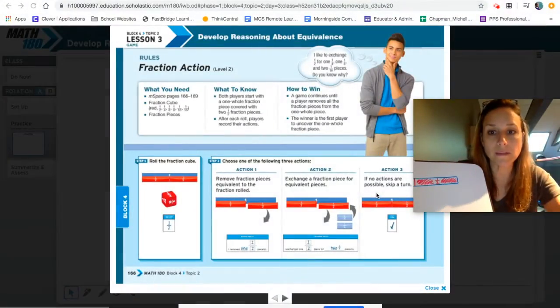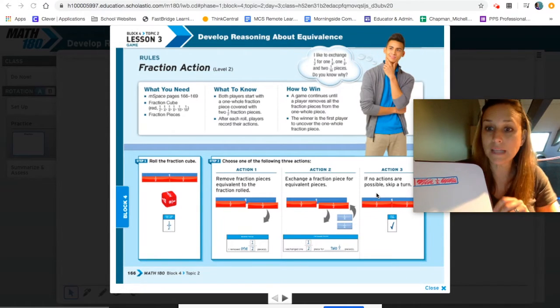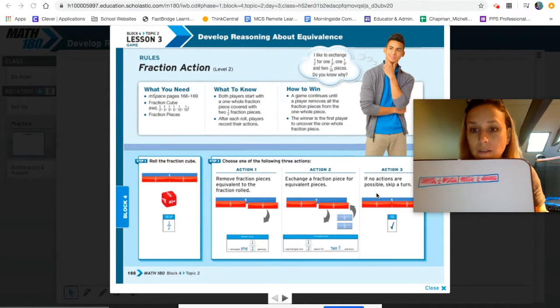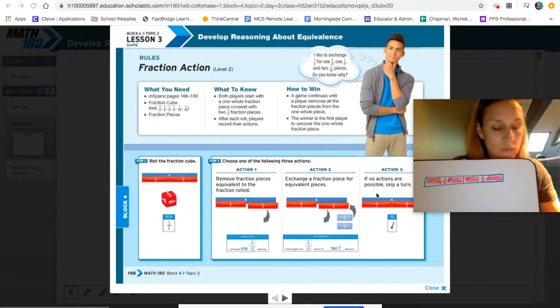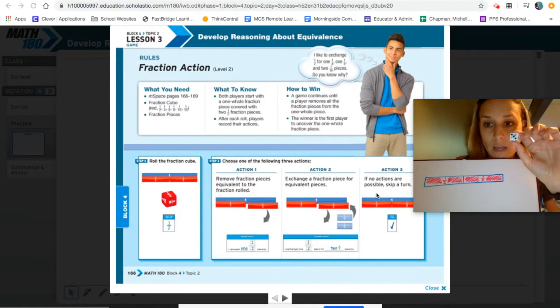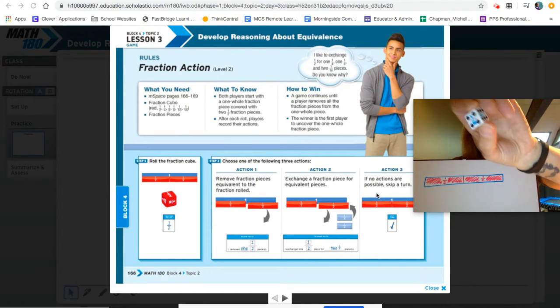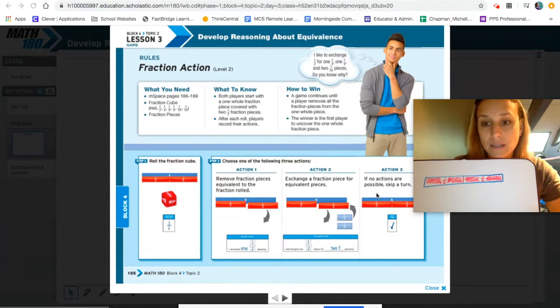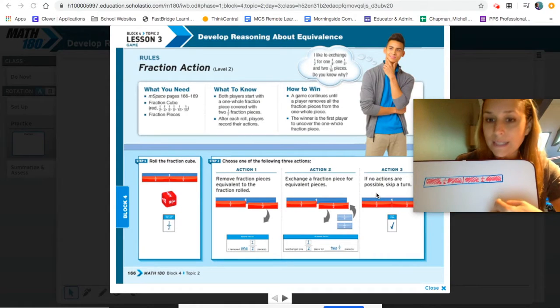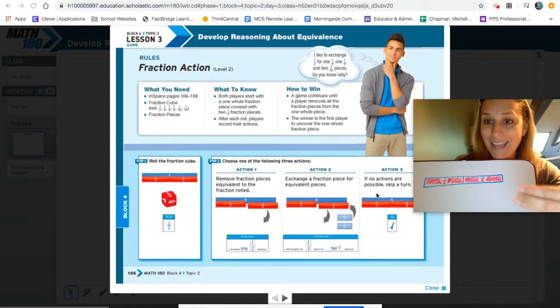So guys, the way you play this game is you want to be the first person to get rid of their entire hole in their model. So what you do is when it's your turn, you start by rolling the dice. Now when I roll the dice, I rolled one sixteenth. So I have a couple of options. If I had a one sixteenth piece here, I could take that out.